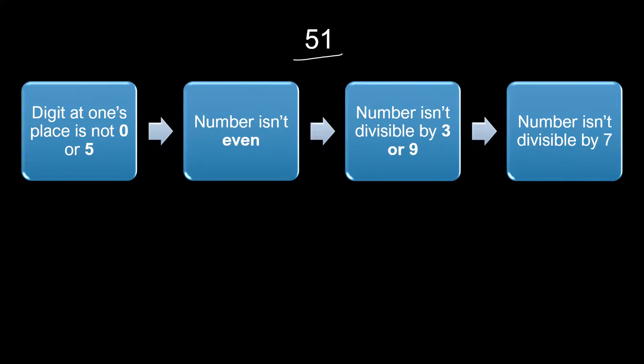Let's examine 51 to see whether it is prime or not. At the first level, the digit at one's place is 1, so it's neither 0 nor 5. This level is crossed. We go to the next level and check whether it's even or odd. The number is odd, so this level is also crossed.